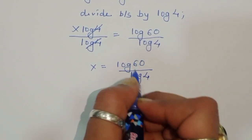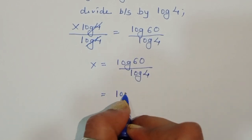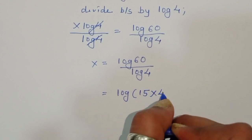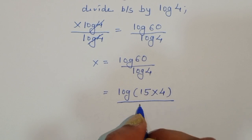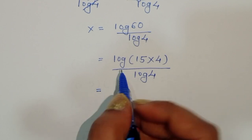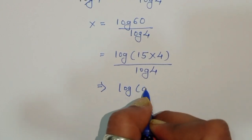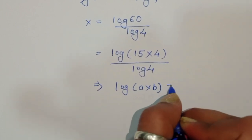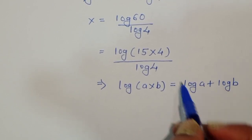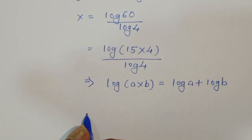Now we expand log of 60. Since 15 times 4 equals 60, we write log of 60 as log of 15 times 4. Using the formula log of a times b equals log of a plus log of b, we get log of 15 plus log of 4.